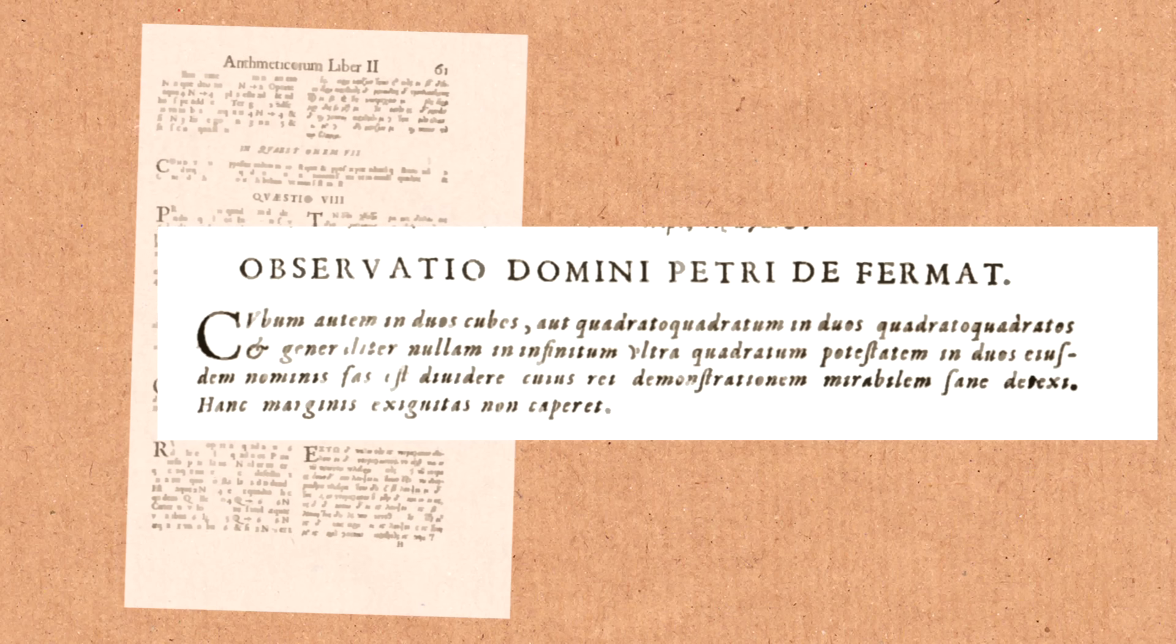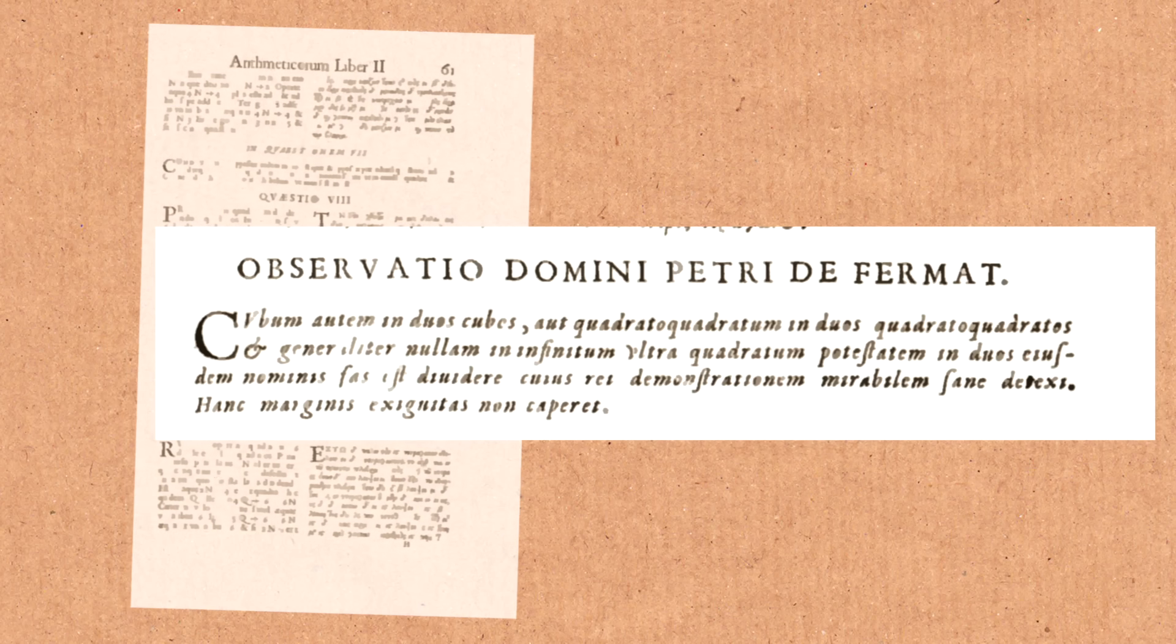And people would look at these notes and they would say, well, Fermat says he can prove this, let's try it. And one by one, people rediscovered the missing proofs. And in every case where Fermat said, I have a proof, he was right. There was a proof, except in this one example here.